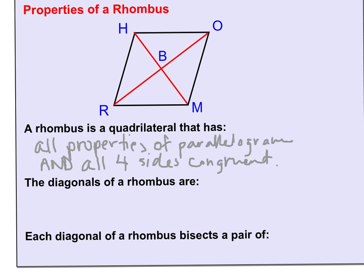The next property of a rhombus has to do with the diagonals. The diagonals of a rhombus are perpendicular. And remember the symbol for perpendicular is an upside down t.